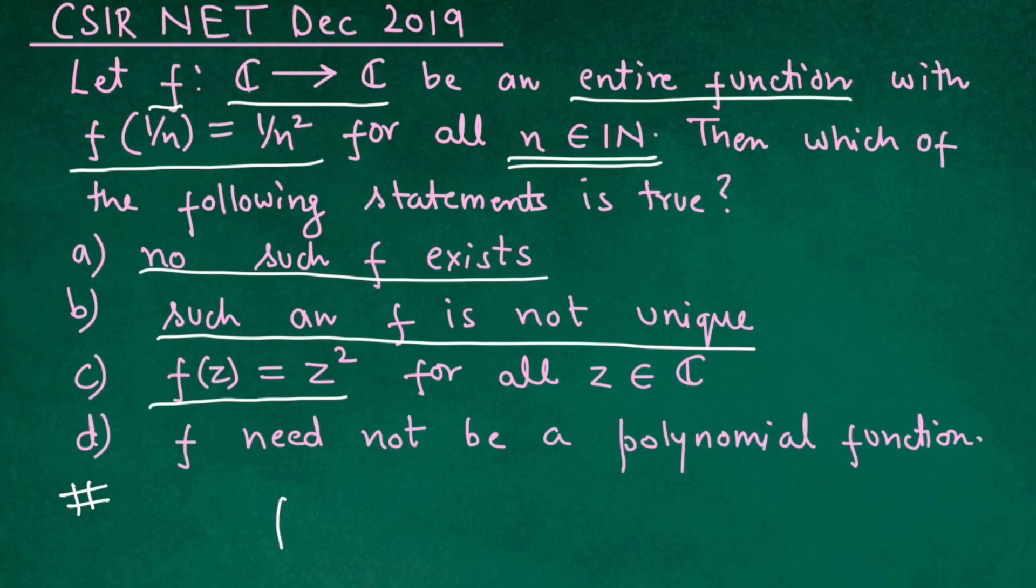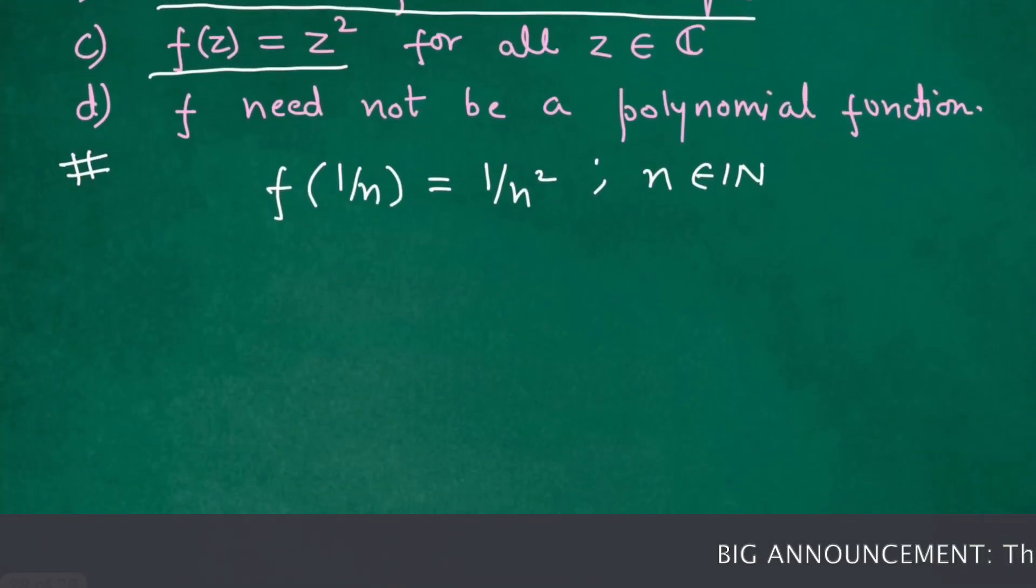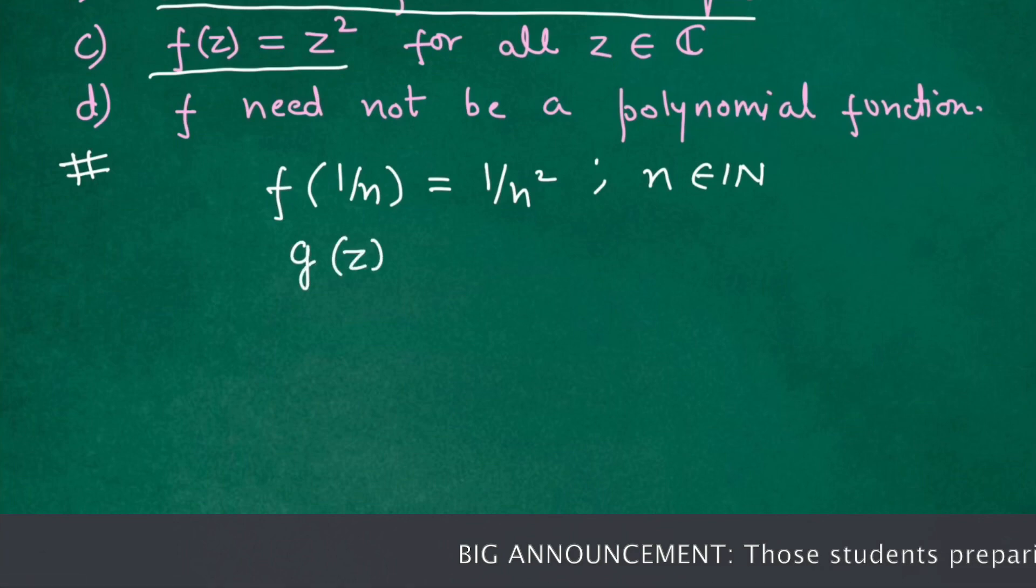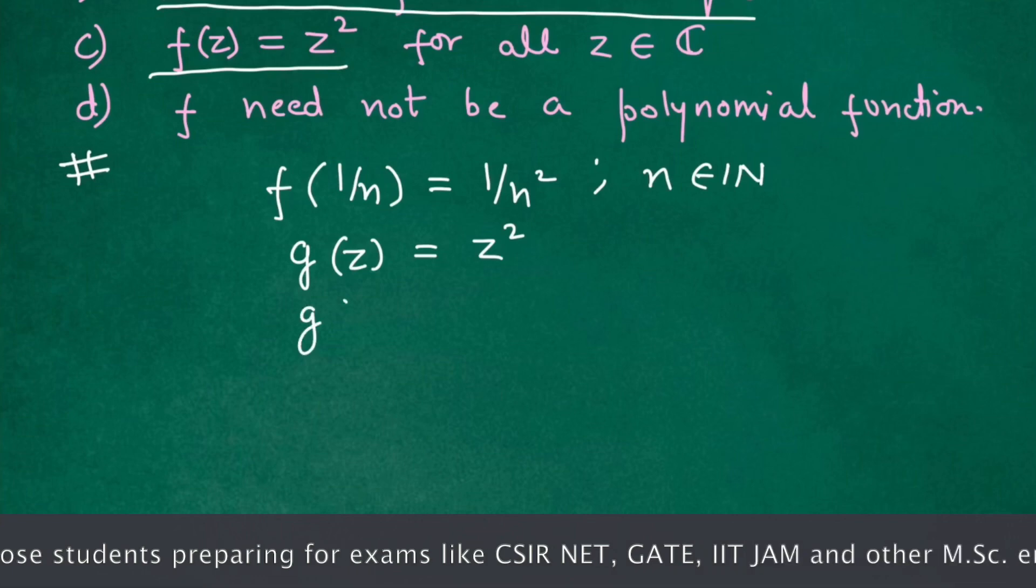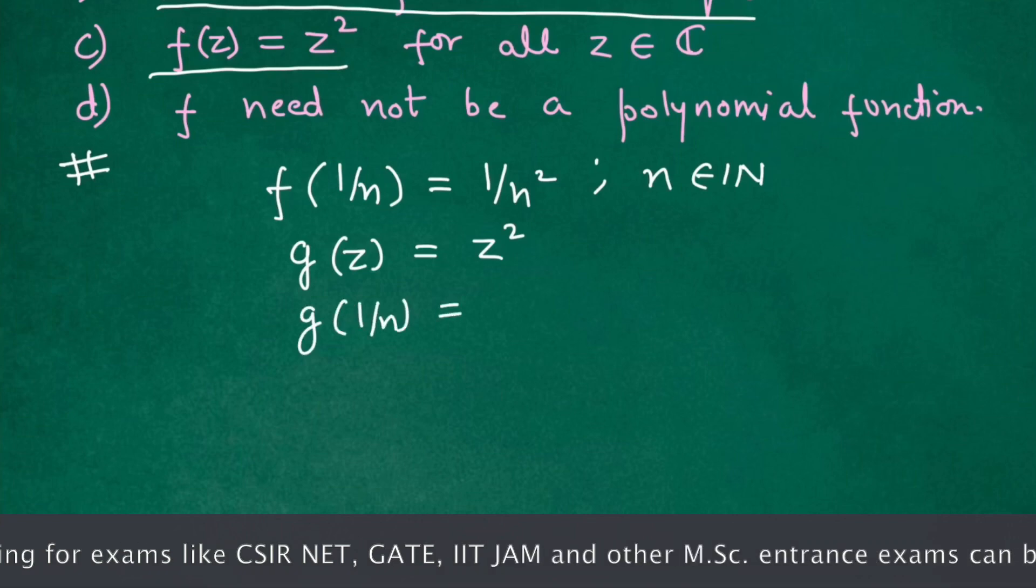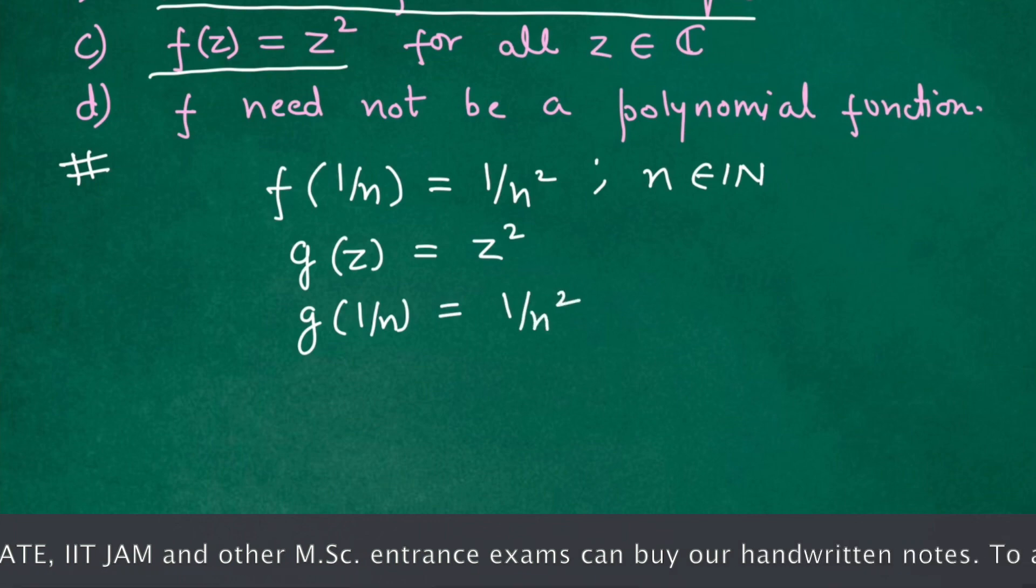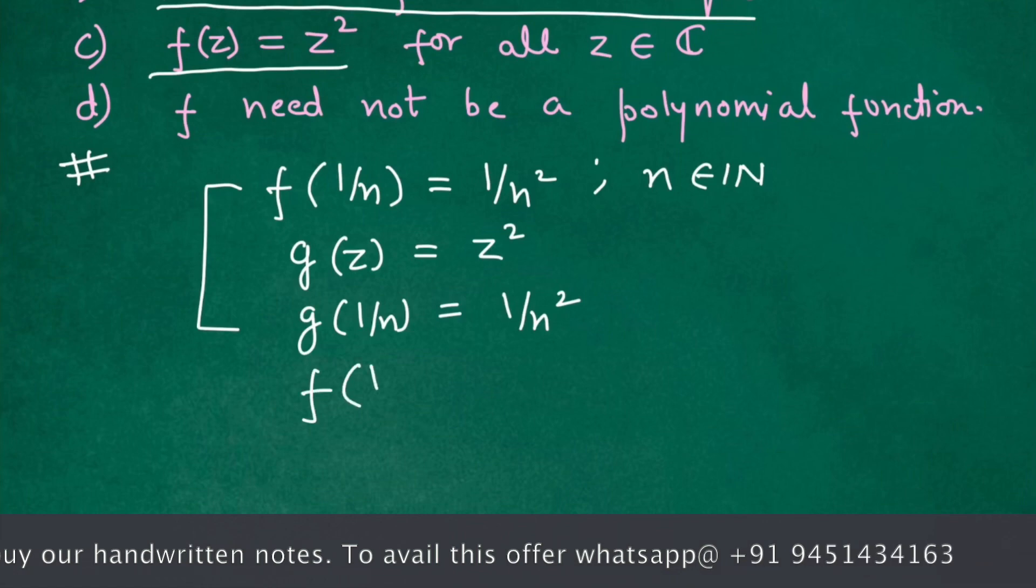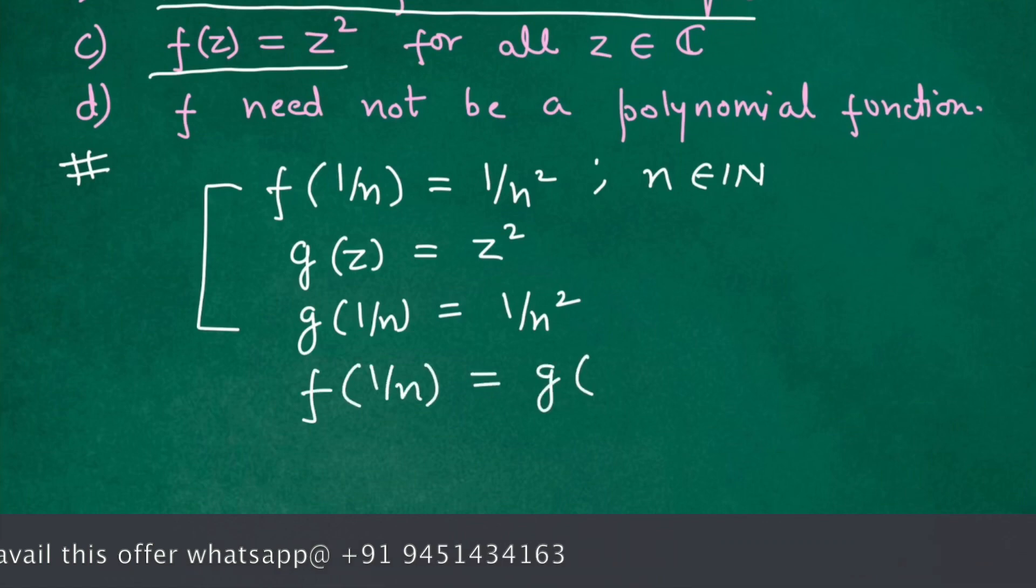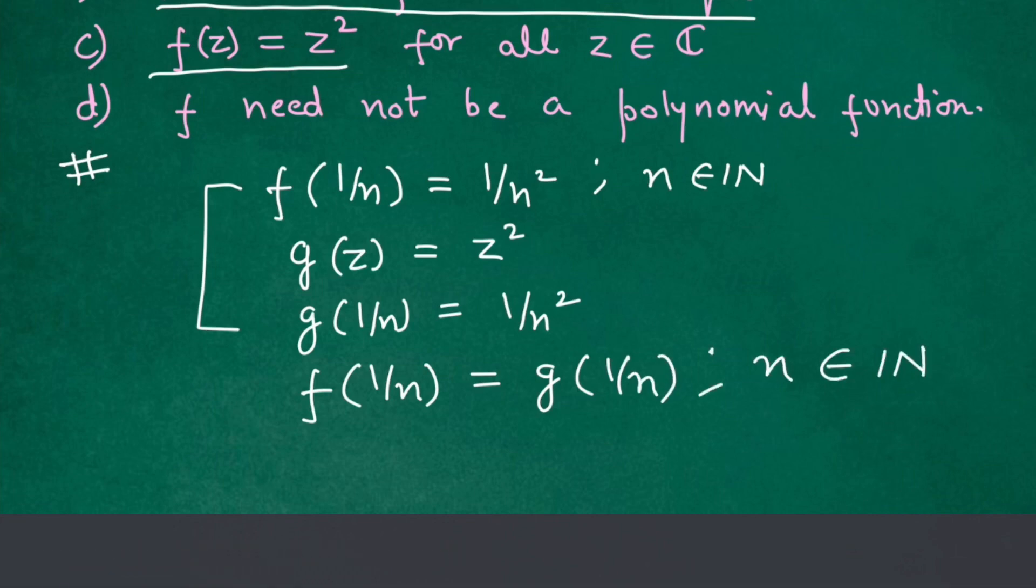It is given that f(1/n) equals 1/n² and n is natural number. Now let us assume some other function g(z) equals z². Now g(1/n) will be 1/n² because g(z) is z². So from these two we can say f(1/n) equals g(1/n) when n is natural number.